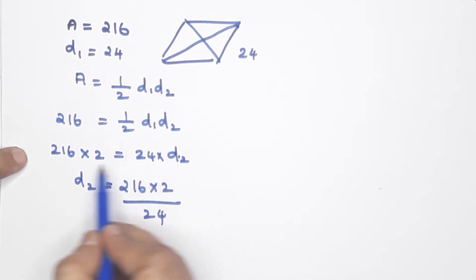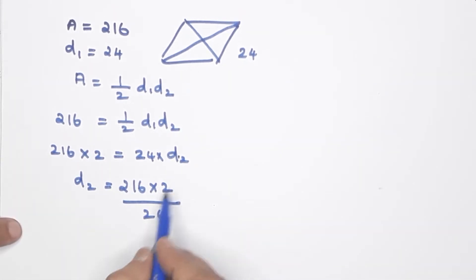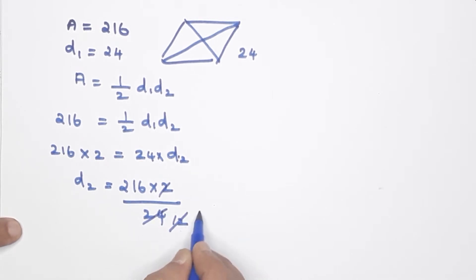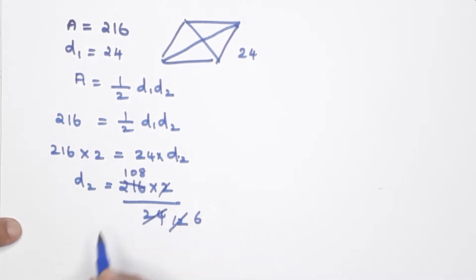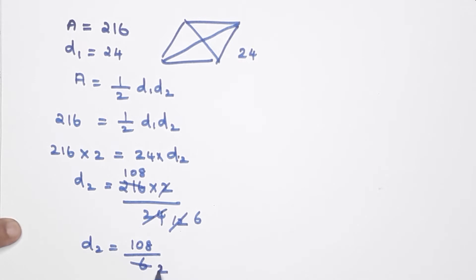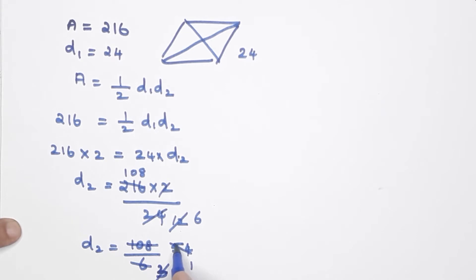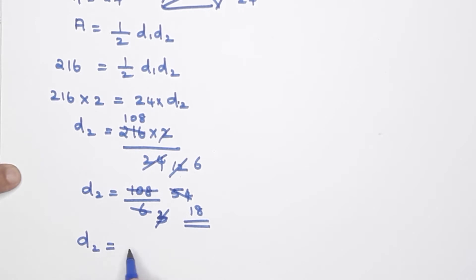Solving: D2 = (216 × 2) / 24 = 432 / 24. Working through the division: 24 goes into 432 giving us 18. So D2, the second diagonal, is 18 centimeters.